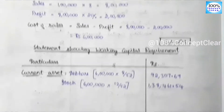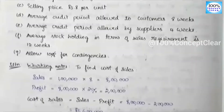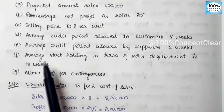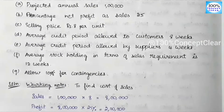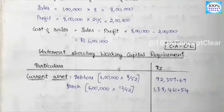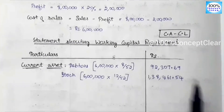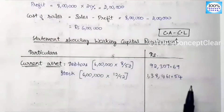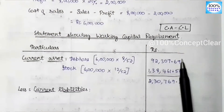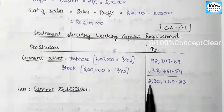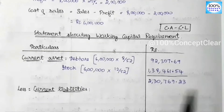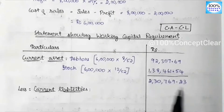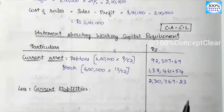We check if there are any more current asset items. If we add these two current asset items together — debtors and closing stock — the total current assets come to ₹2,30,769.23.